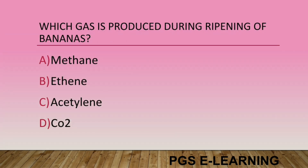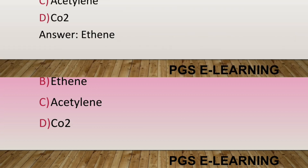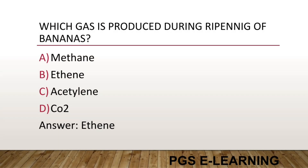Which gas is produced during the ripening of bananas? Option A, methane. Option B, ethene. Option C, acetylene. Option D, CO2. Correct answer is ethene.